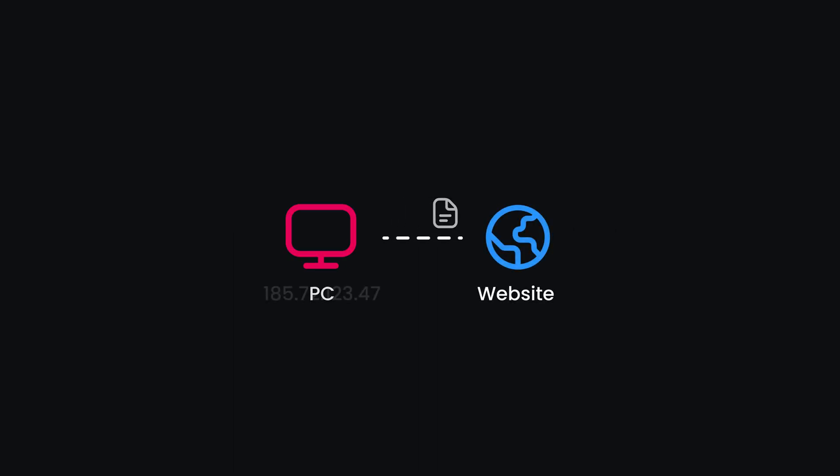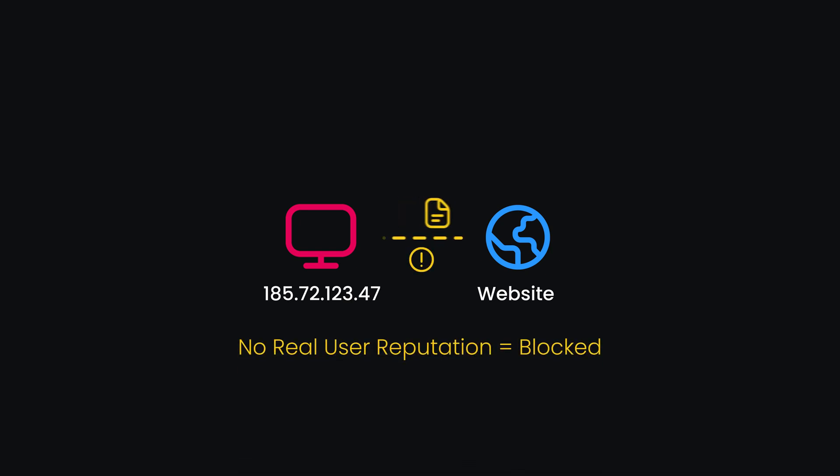IP address fingerprinting. Every request you send reveals the IP address tied to your device. You'll be immediately blocked if too many requests come from the same IP. The same goes for requests from VPNs or some data center proxies, which don't have a real user reputation.